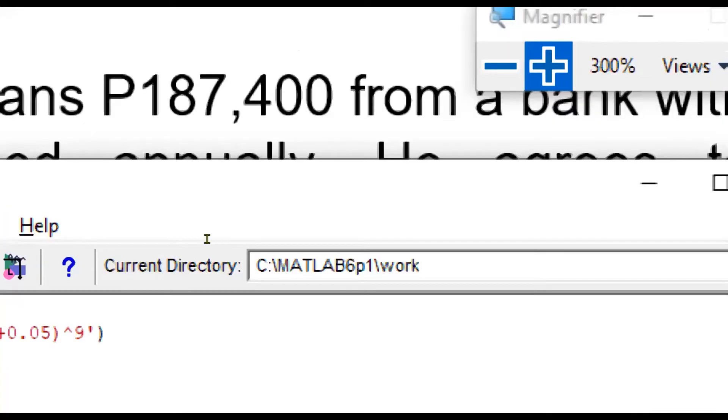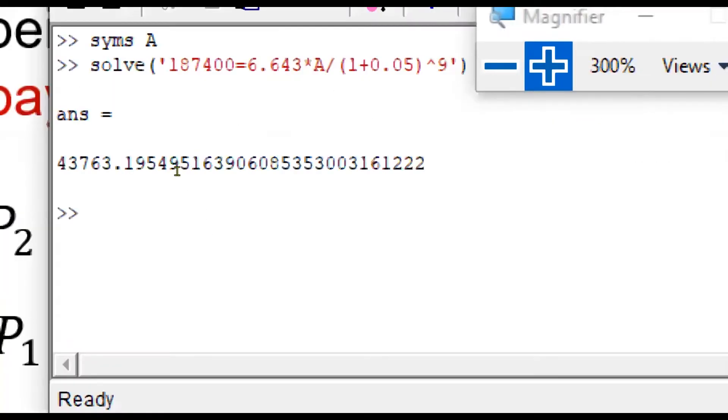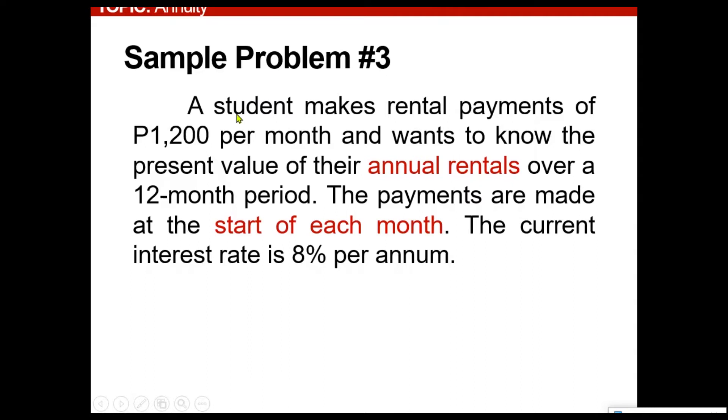Now magnifying the syntaxes as we have used. Initialize the variables. Here's the syntax for the equations itself and then the answer. Example problem number three, a student makes rental payments of 1,200 per month and wants to know the present value of their annual rentals over a 12-month period. The payments are made at the start of each month.